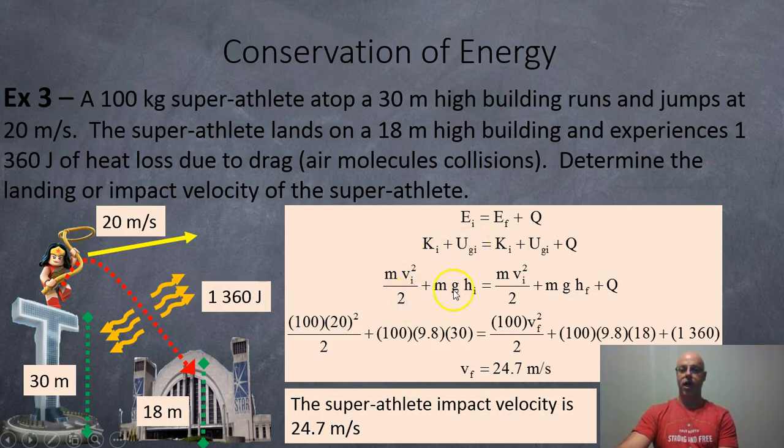So we sub in the formulas for K and U. So mv squared over 2, mgh, mv squared over 2, mgh, and then we've got our heat loss Q. Then we're just going to plug in our numbers. So 100 kilos times 20 squared over 2 plus 100 times 9.8 times 30 meters of height equals 100 kilos times the final speed squared divided by 2 plus 100 times 9.8 times 18 meters, the final height. And then we've got our heat loss of 1,360 joules. And when you work out the algebra on this, you should get a final velocity of 24.7 meters per second.